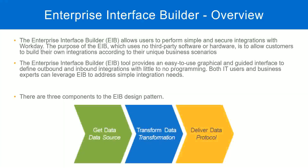These are the three components in an EIB design pattern. We are going to configure these three steps: where are we going to get the data from, do we need transformation — if yes, configure it; if no, leave it blank — and then deliver the data, meaning how are we going to send it to an external system. Once we configure these three steps, our EIB is ready and we can start exchanging information from Workday with an external system.